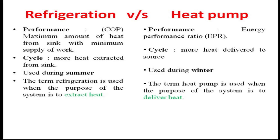The output of the refrigeration system is reduction in temperature at the evaporator; the output of the heat pump is increase in temperature at the condenser. The requirement for both is supply of energy to the compressor. Performance is output by input — for refrigeration, it is heat transfer at the evaporator divided by compressor work; for heat pump, it is heat transfer to the condenser divided by compressor work.